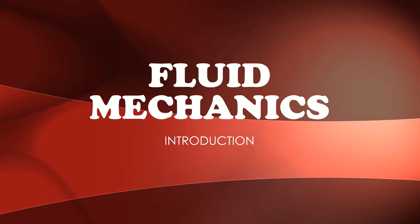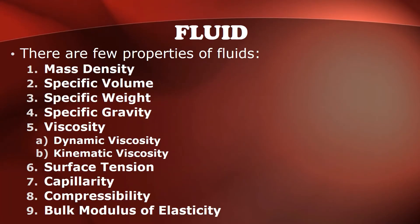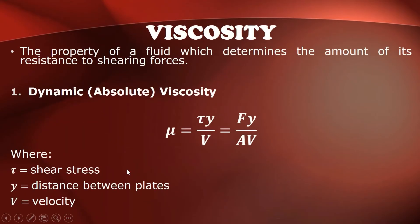We are now going to proceed with the second part of the properties of fluids: viscosity and surface tension. Viscosity is the property of a fluid which determines the amount of its resistance to shearing forces. There are two types of viscosity: the dynamic or absolute viscosity, and the kinematic viscosity.